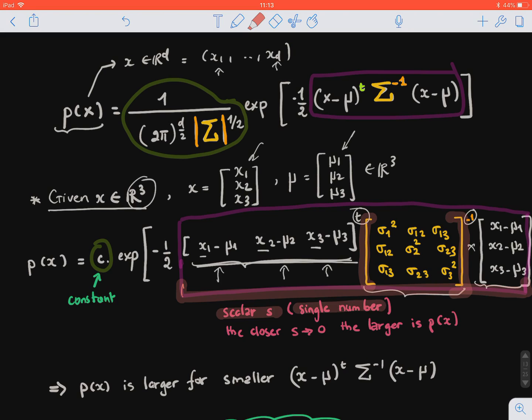And if we note, this is a scalar, a single value number, and the closer it gets to zero, the larger the probability is. So p(x) is larger for smaller (x - μ)ᵀ Σ⁻¹(x - μ), and we're going to see that this is what we call the Mahalanobis distance.